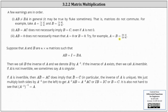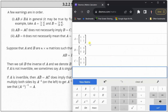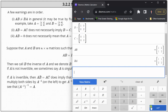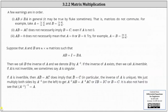Now let's talk about a few warnings. First, A times B doesn't equal B times A in general. It may sometimes, but it's not a property — that is, matrices do not commute, or the commutative property does not hold. For example, let's consider matrix A and matrix B and check to see if A times B equals B times A using the Desmos matrix calculator. Notice how the two products are not equal. Second, A times B equals A times C does not necessarily imply that B equals C, even if A is not the zero matrix.